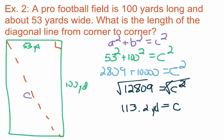So the diagonal is 113.2 yards. The corners of a football field are marked by pylons — those little orange rectangles sticking up that separate the playing field from the end zone. So from one pylon to the opposite corner pylon, the distance is 113.2 yards.